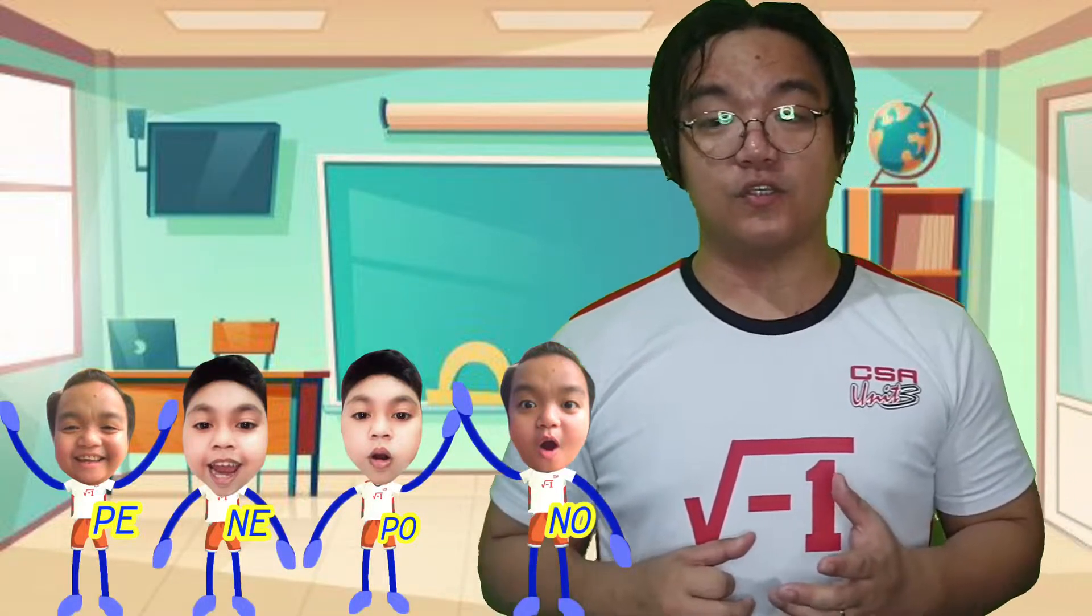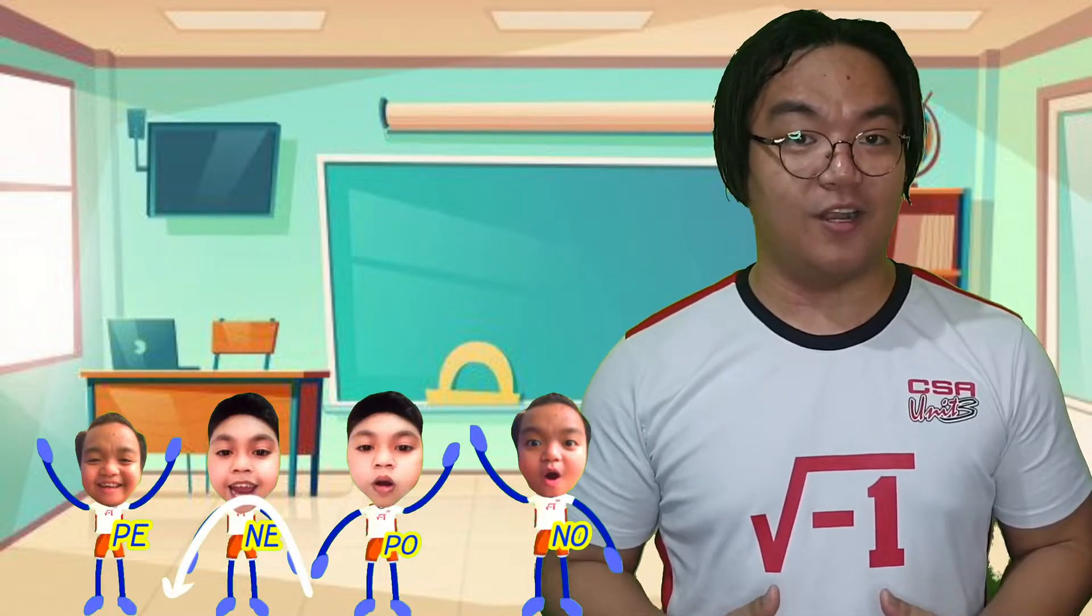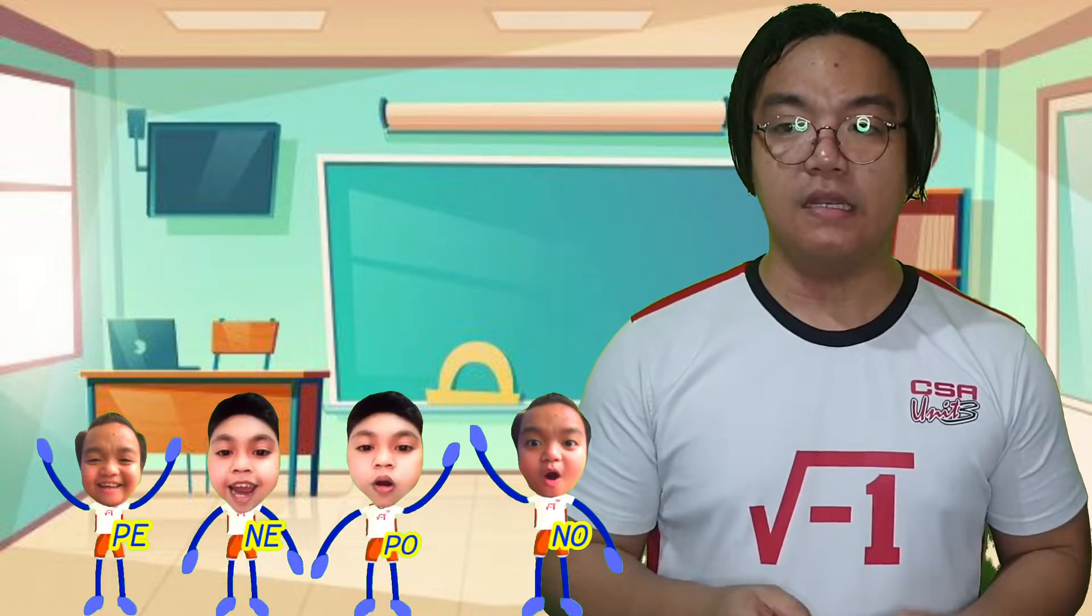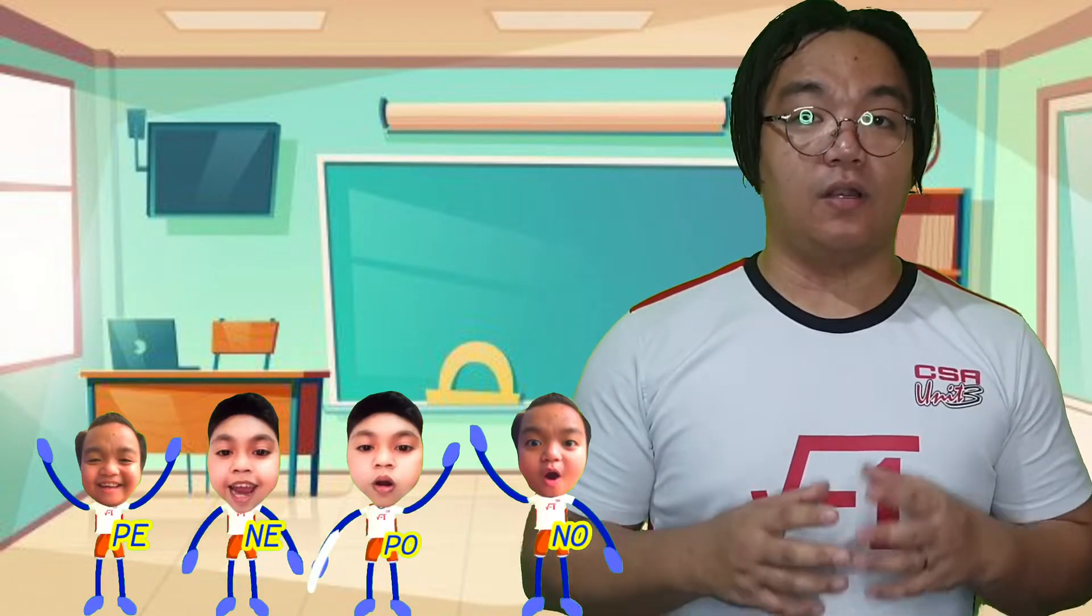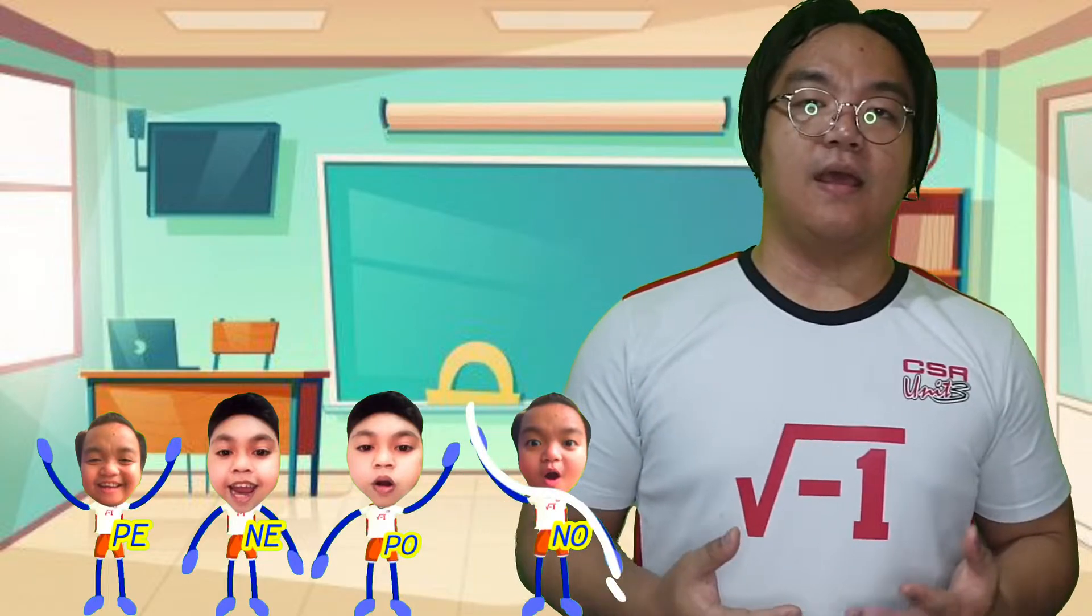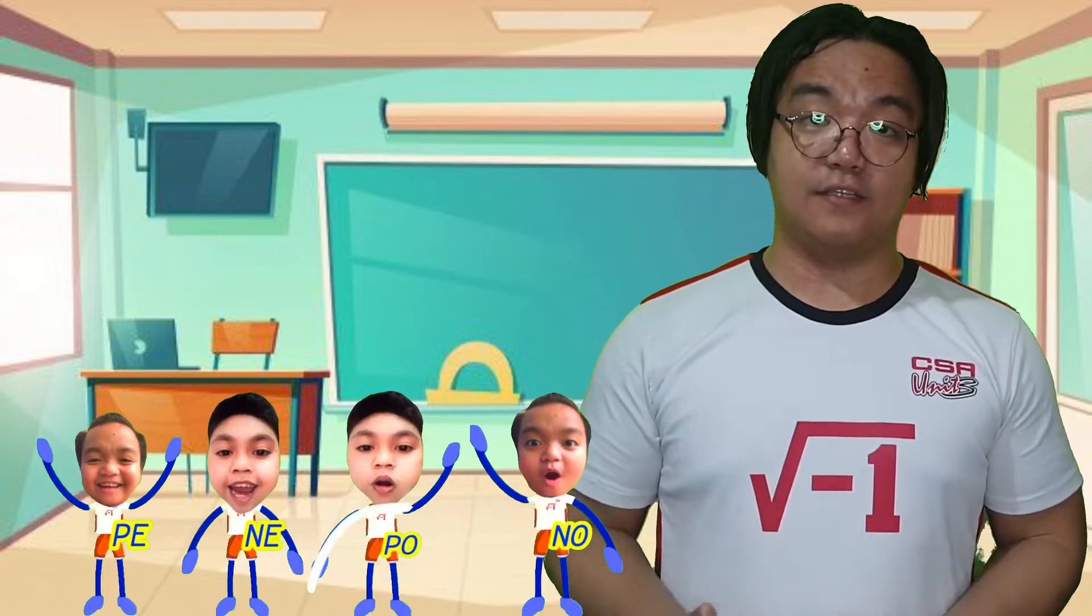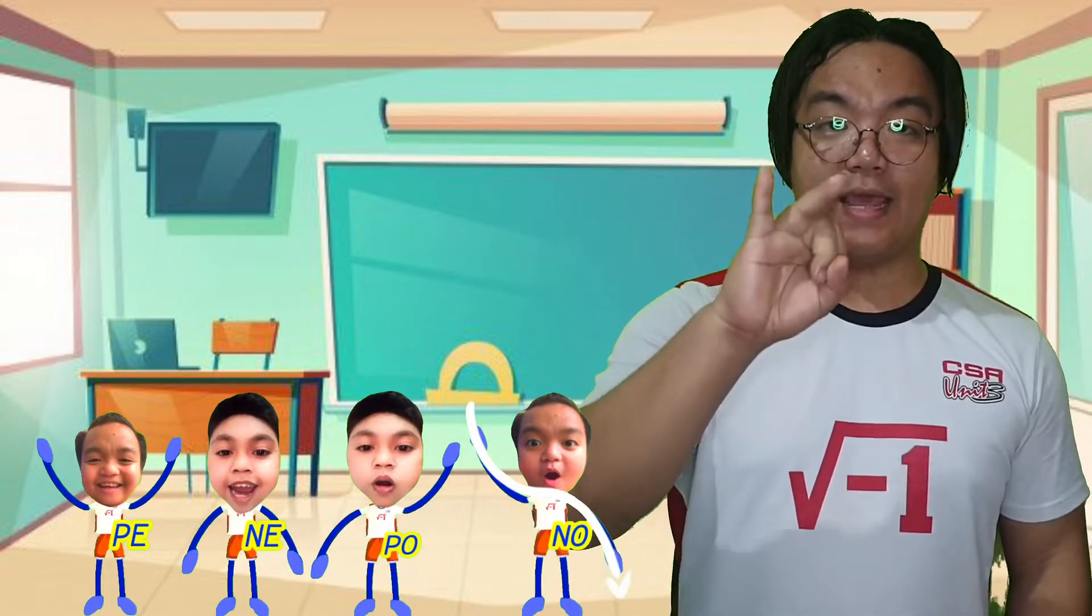First, what does penepono stand for? Penepono is an abbreviation. PE means positive even, NE means negative even, PO means positive odd, and NO means negative odd. So remember: PE, NE, PO, NO.